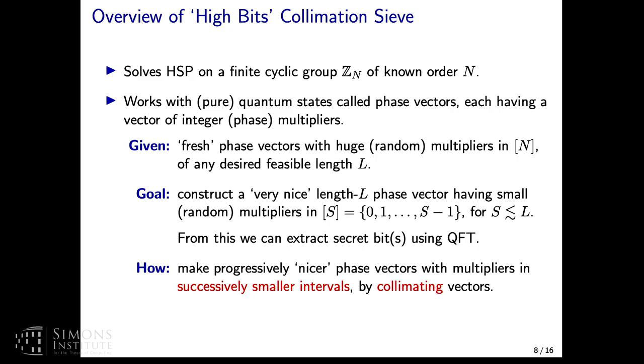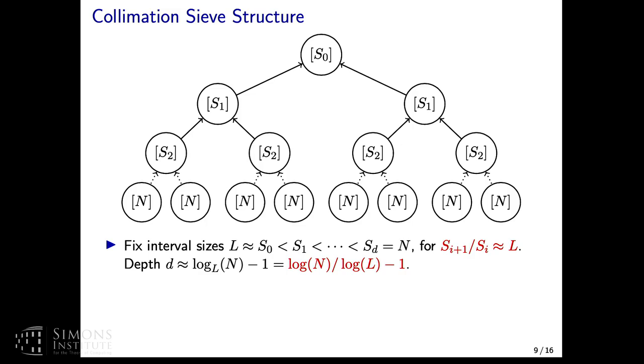Originally we will be given fresh phase vectors with huge random multipliers. So their multipliers are in the interval zero to n, where n is the group order. We can construct phase vectors of any desired length L. Think of this L as the amount of QRACM that you have. So you're given these initial fresh phase vectors, but they have nasty, huge multipliers. Our goal is to construct a very nice phase vector which has small multipliers. So by small, I mean the multipliers should be roughly bounded by L. We start with these huge multipliers in our original phase vectors, we want to whittle them down.